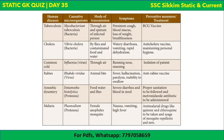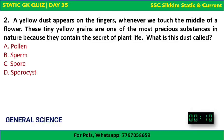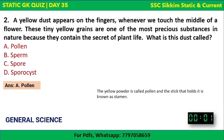Next question: a yellow dust appears on the fingers whenever we touch the middle of a flower. These tiny yellow grains are one of the most precious substances in nature because they contain the secret of plant life. What is this dust called? Options: pollen, sperm, spore, or sporocyst. The correct answer is pollen.